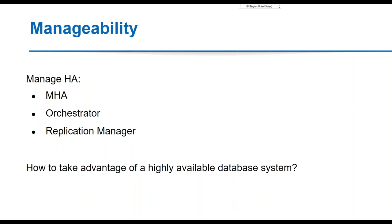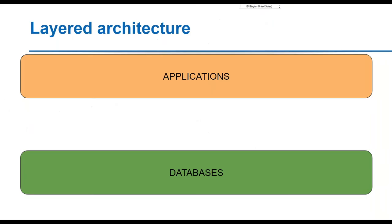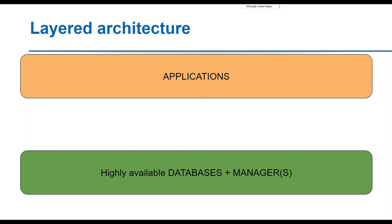To understand how to take advantage of highly available systems, consider a layered architecture: an application layer, a database layer, and sometimes an external manager. The application needs a way to know about topology changes — this is normally done using service discovery, which is quite common already.